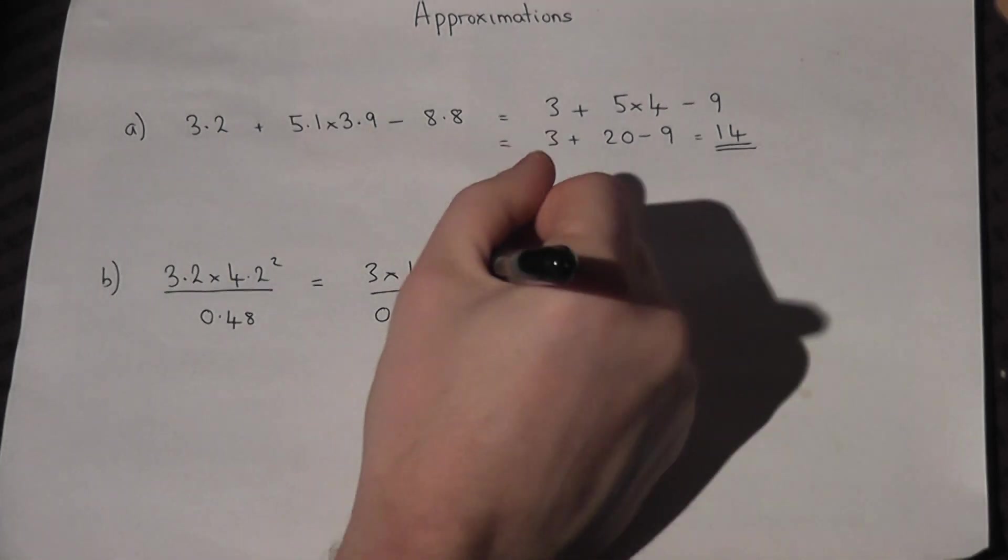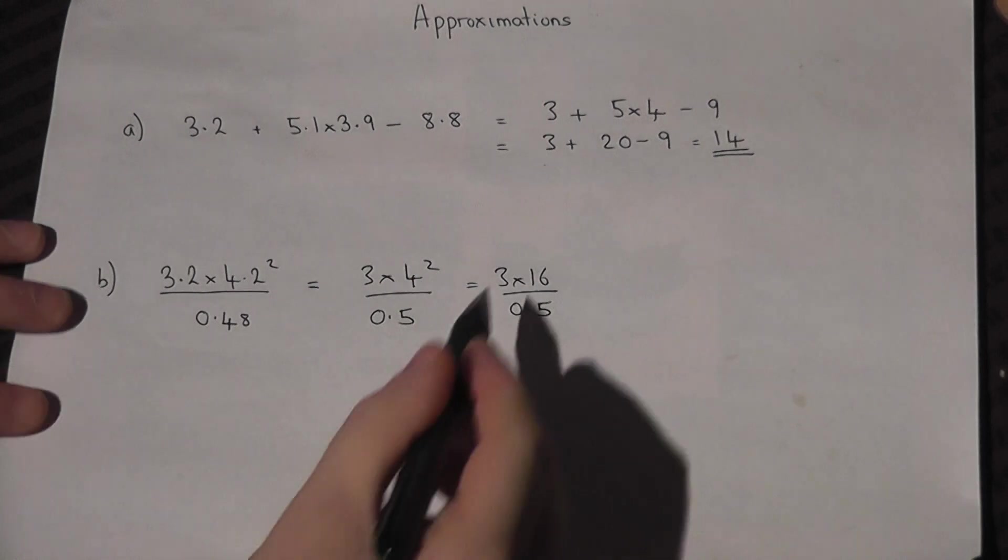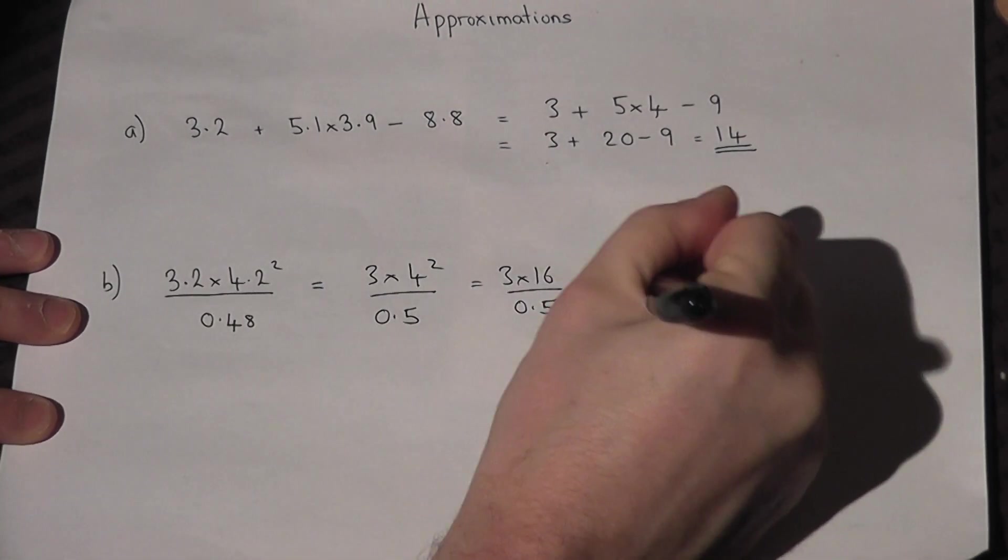We square first. We then work out the top. 3 16s are 48.